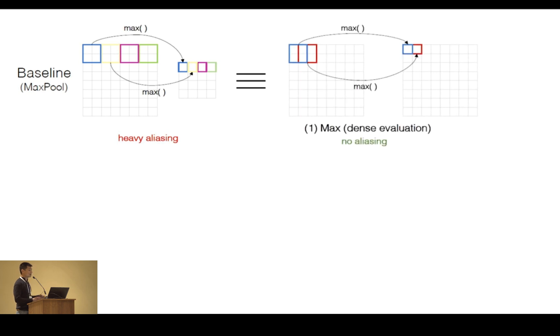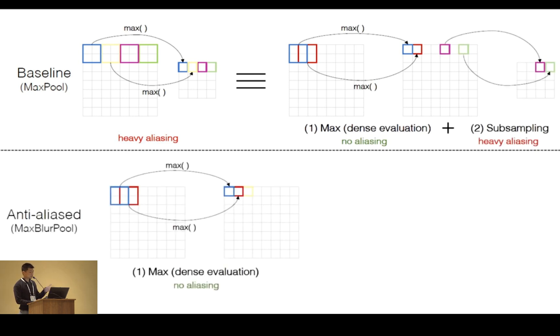And our simple insight is that max pooling can be divided into two operations sequentially. One is taking the max, but doing so in a dense fashion. And the second is subsampling from this intermediate feature map. And this allows us to isolate the problem. We can actually keep the first operation because it's not aliasing at all.